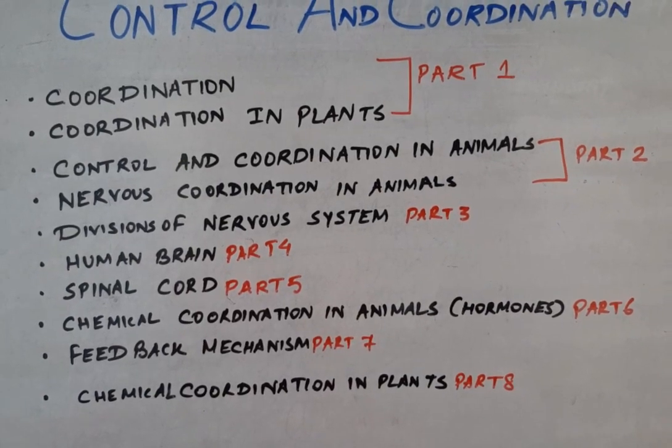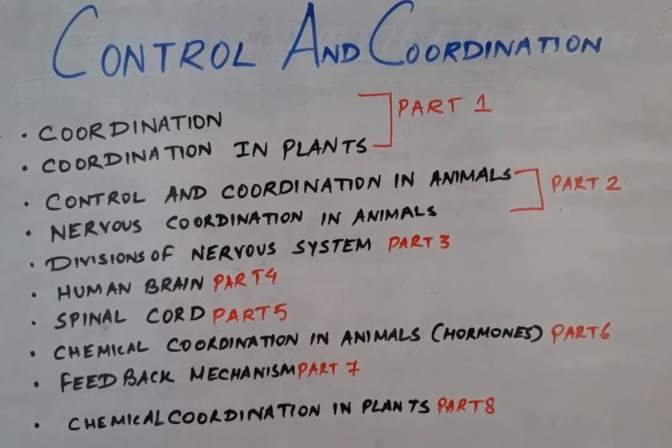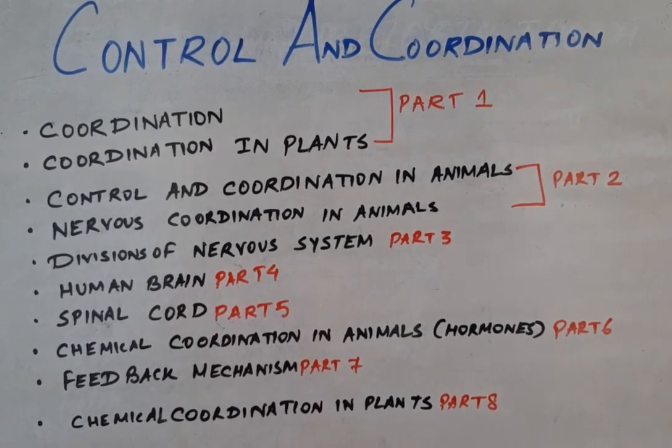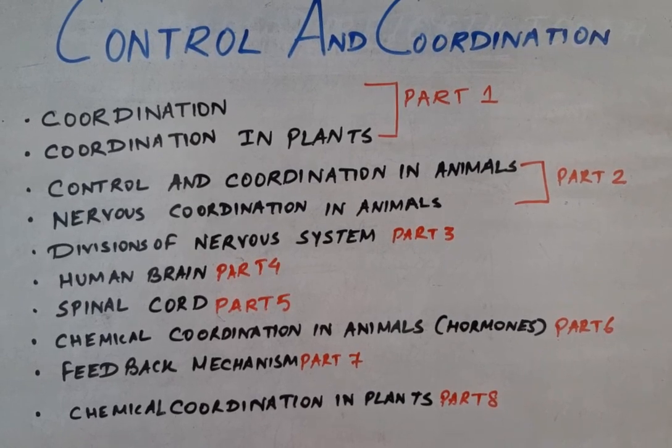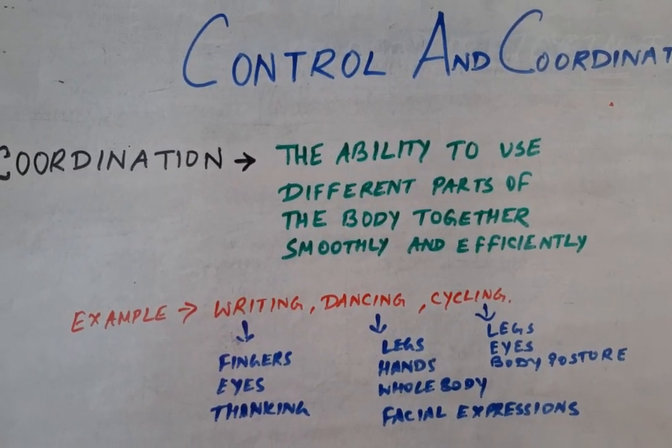The sixth video will be about chemical coordination in animals — hormones, the endocrine system, and the feedback mechanism. The seventh and final part will cover chemical coordination in plants. So keep watching till the end of the video.